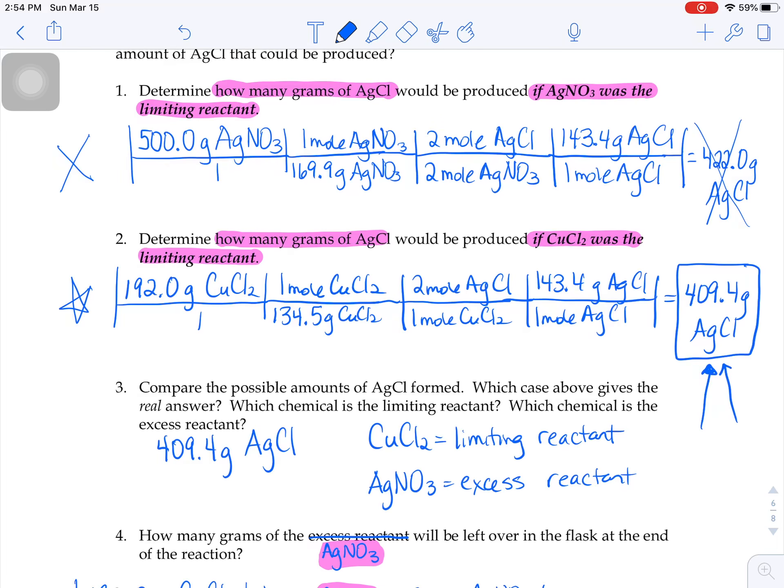That 422 was our fake answer. We never really made 422. We're supposed to be able to make 409.4.